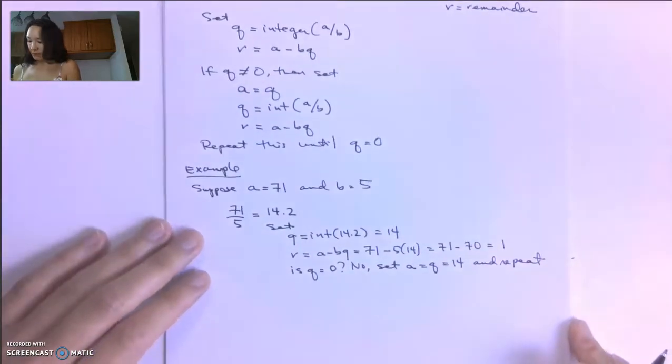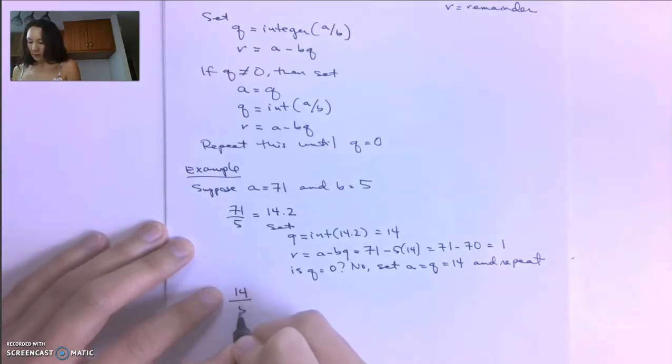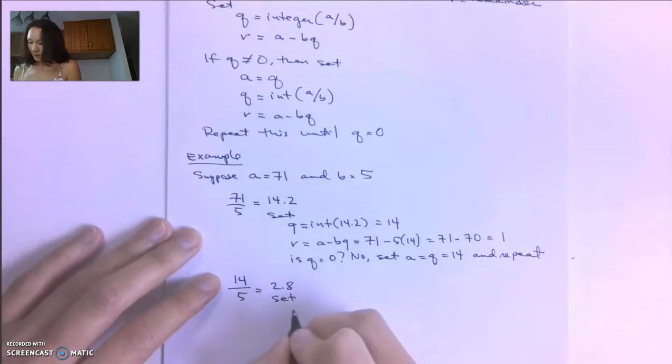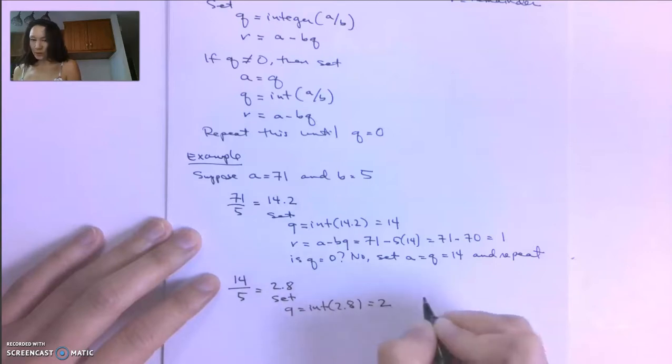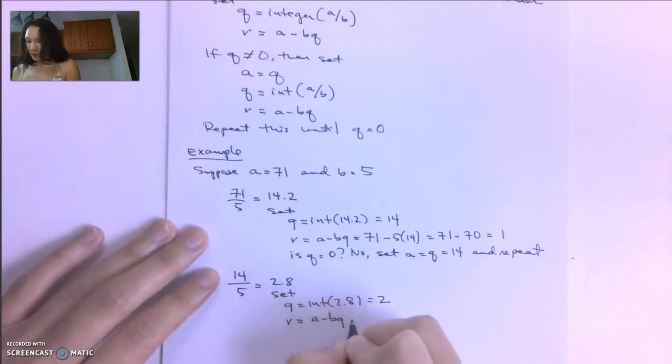So this is what makes this algorithm iterative. Now at our next step, A is now 14. So 14 divided by 5 is 2.8. So now we set Q equal to the integer part of 2.8, which is just 2.